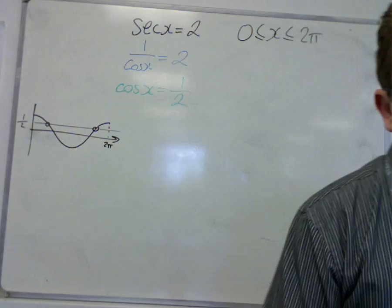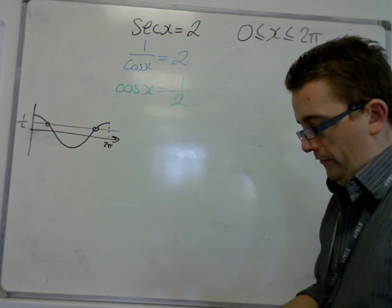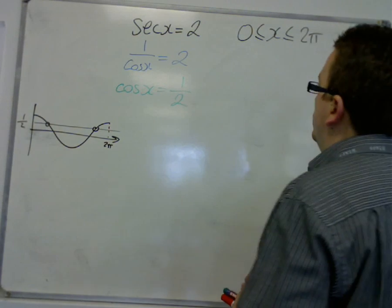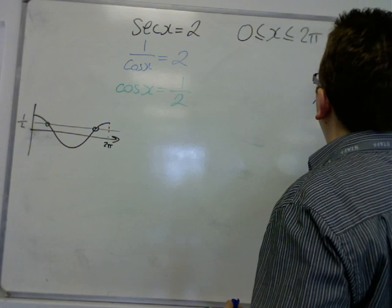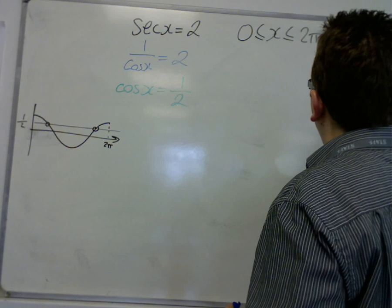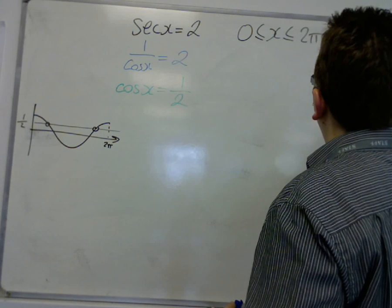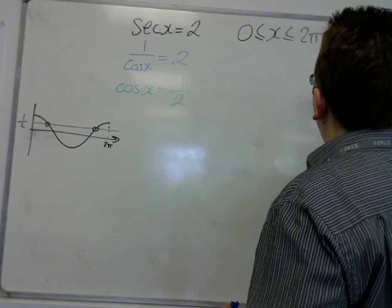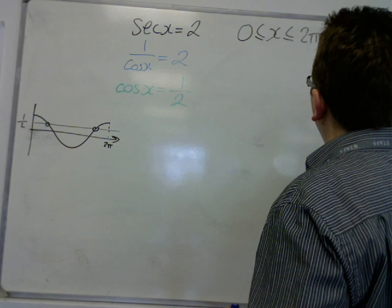So we do inverse cos of a half, which if you use a triangle with sides 1, 2, root 3, has angles π over 3 and π over 6.